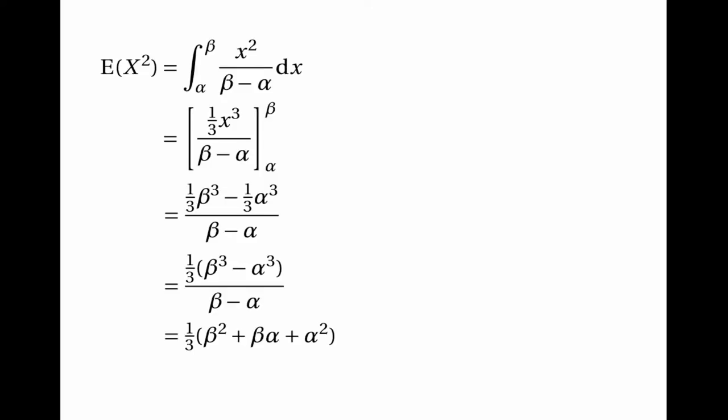A third thing you should understand is the variance of a continuous uniform distribution. To work out the variance, we need to find the expected value of x squared. That's the integral of x squared over beta minus alpha evaluated with limits alpha and beta, which gives a third of x cubed over beta minus alpha with limits alpha and beta. This equals a third of beta cubed minus alpha cubed over beta minus alpha. The numerator is divisible by the denominator, and doing the division gives one third of beta squared plus beta alpha plus alpha squared.